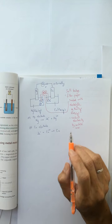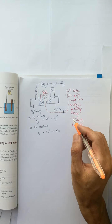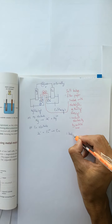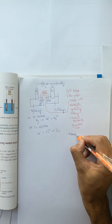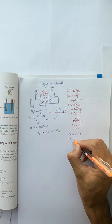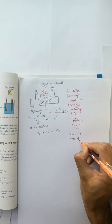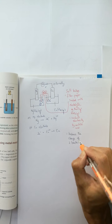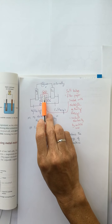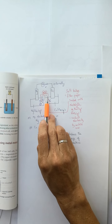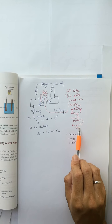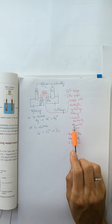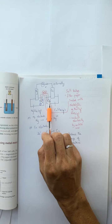As you can see, the salt bridge balances the charge in both beakers. Inside the salt bridge, the ions are responsible for the conduction of electricity.